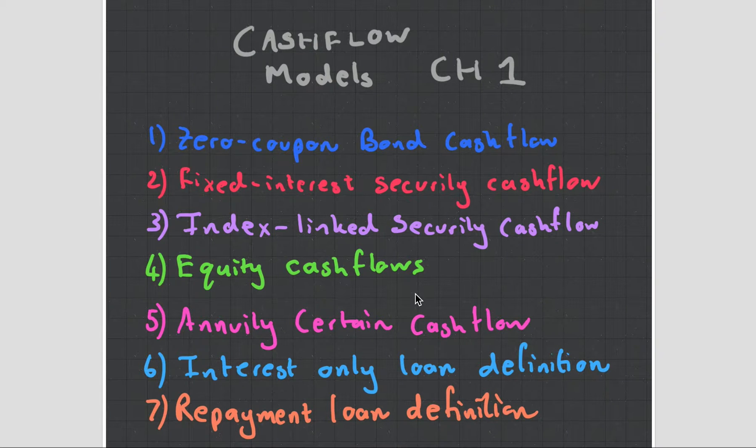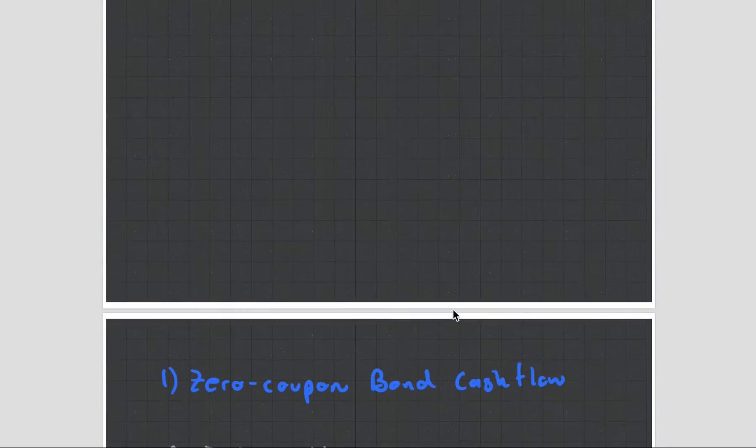Hey guys, it's MJ, the student actuary, and we're going to be talking about Chapter 1, Cash Flow Models, for subject CT1. Now, CT1 is all about the financial mathematics behind actuarial science. In this chapter, we're going to be looking at seven different cash flows and what they mean. These are essentially the building blocks to the rest of the course. So, I hope you enjoy the video.